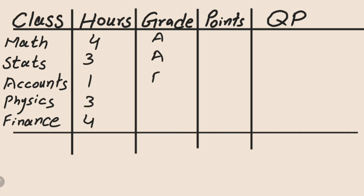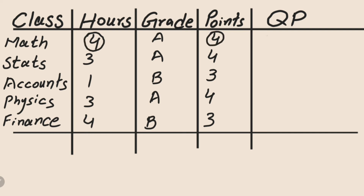For the grades: Math gets an A, Stats an A, Accounts a B, Physics an A, and Finance a B. The corresponding points are 4, 4, 3, 4, and 3. Multiplying credit hours by points gives: 16, 12, 3, 12, and 12.